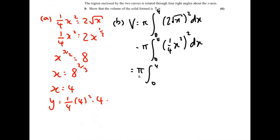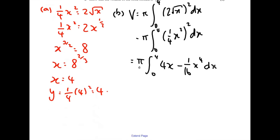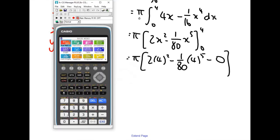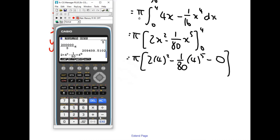That gives π times the integral between 0 and 4 of (4x minus 1/16 x⁴) dx. Integrating: 4x becomes 2x², and 1/16 x⁴ becomes 1/80 x⁵. Substituting the limit of 4 in and working this out gives the required answer. It's fine to just type this into the calculator even though it's a show-that question.